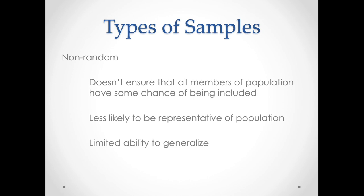It may be necessary to gather information in a non-random way using snowball methods in order to be able to speak to people who are of interest to you. In the case of studying wealthy people, it's incredibly hard to get access to them, and so we draw upon a single person and then ask them to recommend subsequent people for us.